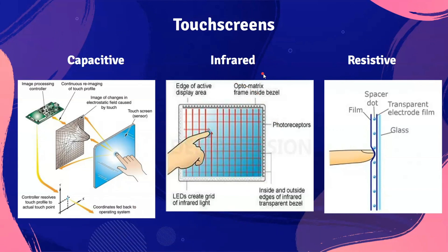Infrared touch screens come in two types: heat-sensitive and optical. Heat-sensitive screens require a warm object to register input. Optical infrared screens use an array of infrared sensors opposite infrared beams; when a user touches the screen, the beams are interrupted, and the coordinates of the touch are determined. Both types support multi-touch and offer good screen durability, but they are relatively expensive. The optical type allows bare fingers, gloved fingers, or a stylus, while the heat-sensitive type only allows bare fingers.